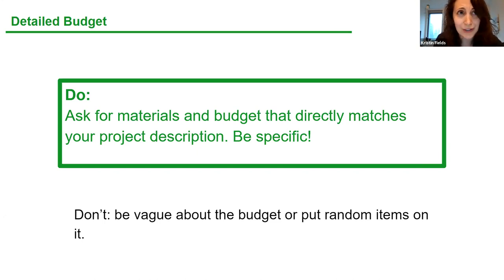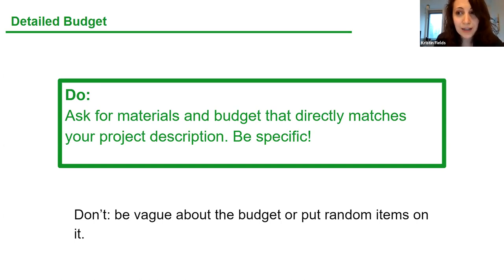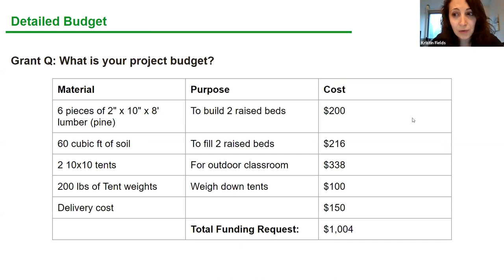Also, if the greenhouse costs $5,000 and the grant max is $2,000, you need to explain where the other $3,000 comes from. Sometimes grants ask for a budget narrative, which gives you the opportunity to explain what you're asking for. Be specific, and if the grant is capped at $2,000, try to get to that $2,000 — use the full amount available.